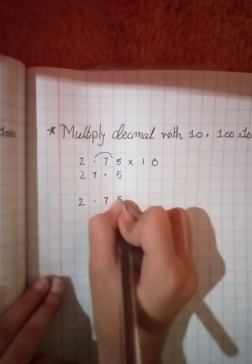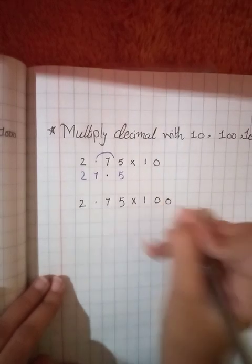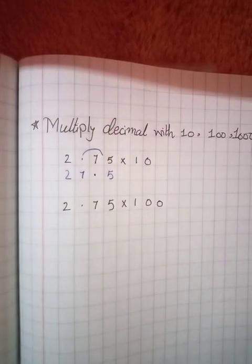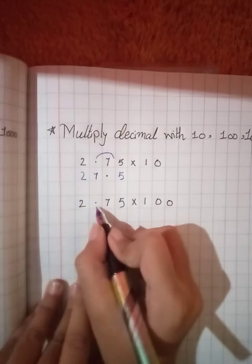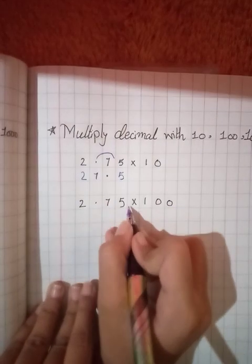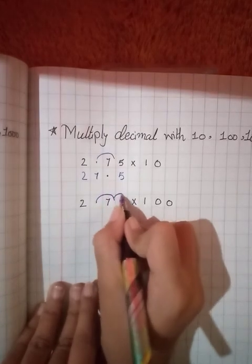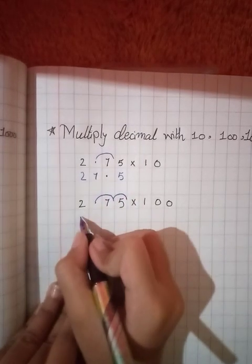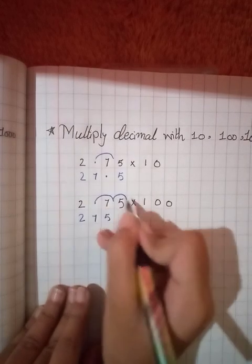Second equation is 2.75 multiplied by 100. In this equation I have two zeros, so now the decimal point moves forward two places - one, two. The answer is 275, and the decimal point will be after the 5.